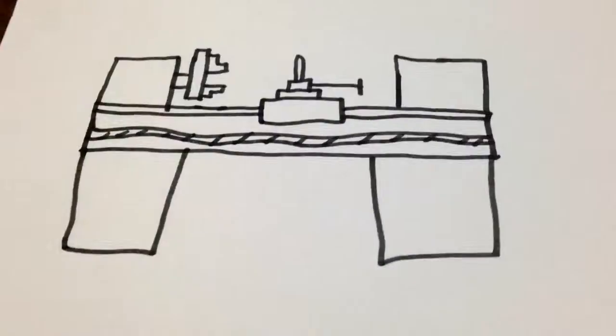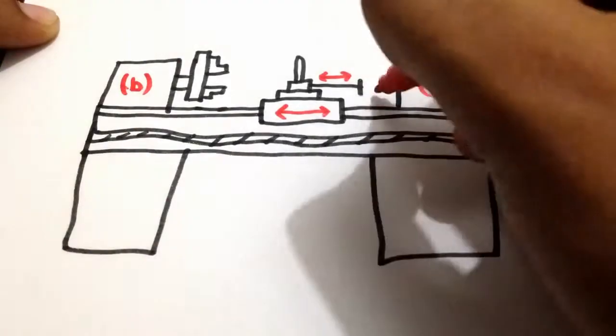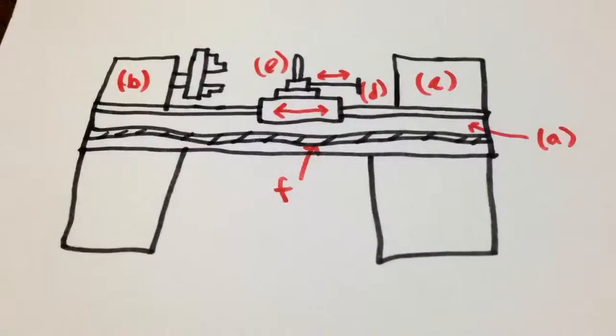A lathe machine generally includes the following parts: A. Bed, B. Headstock, C. Tailstock, D. Carriage, E. Feed mechanism, and F. Thread cutting mechanism.